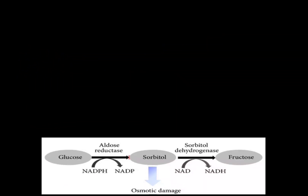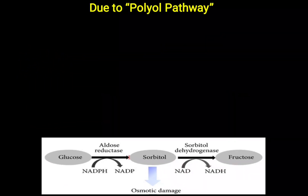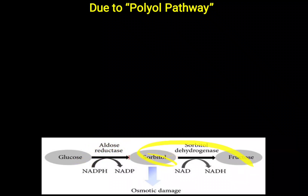The second reason is the polyol pathway. The polyol pathway is the conversion of glucose to fructose. Two enzymes are needed: first, aldose reductase converts glucose to sorbitol, which is a type of alcohol. Then sorbitol is converted into fructose, a keto sugar, with the help of sorbitol dehydrogenase. This glucose to fructose formation is possible with the help of the polyol pathway.